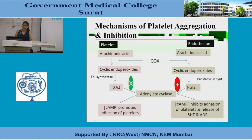Within platelets, arachidonic acid activates COX, which activates cyclic endoperoxidase and thromboxane synthetase to produce thromboxane A2. Thromboxane A2 stimulates adenylyl cyclase to decrease cyclic AMP, which promotes platelet adhesion to the endothelium. Conversely, prostacyclin synthase produces prostacyclin I2, which increases cyclic AMP, inhibiting platelet adhesion and release of 5-HT and ADP. This represents the balance between thromboxane A2 at the platelet and prostacyclin at the endothelium.